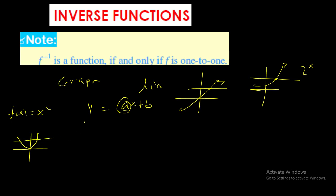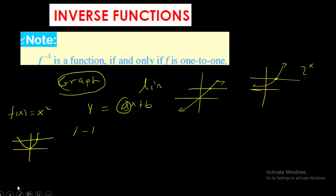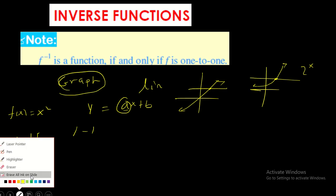So to confirm one-to-one by the horizontal line test, the graph of the function must be crossed just once. This is the graphical way to check whether a function is one-to-one or not.